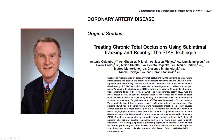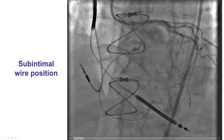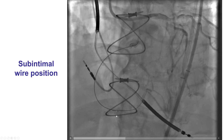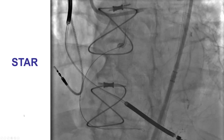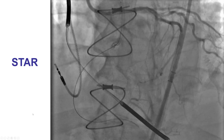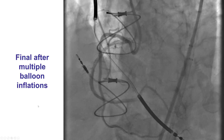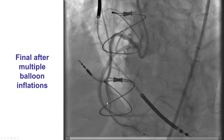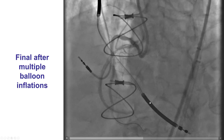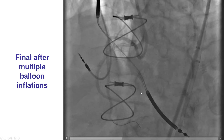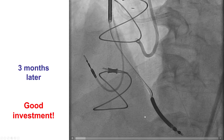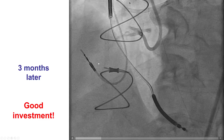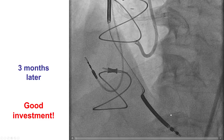The STAR technique described by Antonio Colombo involves advancing the knuckled wire all the way until it spontaneously reenters into the distal true lumen. This is an example of a patient in whom sub-intimal crossing was achieved. Stingray was used in an attempt to reenter, but the wire kept being in the sub-intimal space. Eventually, after multiple attempts, a knuckle was formed with a polymer-jacketed wire. After multiple balloon inflations, there was some antegrade flow restored, but the distal position was not in the true lumen, so no stents were placed. The patient came back three months later with good antegrade flow — a successful investment technique — and a workhorse guide wire was easily advanced distally and stents were placed.